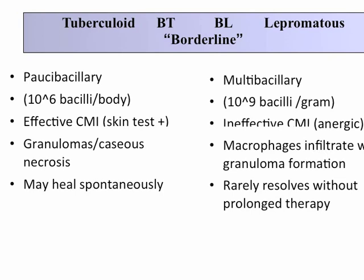Multibacillary means you have a lot of bacilli — we're up into billions of bacilli per gram in a random skin biopsy. These patients have very ineffective cell-mediated immunity. They don't make interferon-gamma, which is what protects you in tuberculoid leprosy. They basically continue growing. In lepromatous disease, you see macrophages extensively infiltrating skin without granuloma formation, and they rarely resolve without prolonged therapy. On the tuberculoid side, they're pretty easy to treat because so few organisms give antibiotics a real chance.